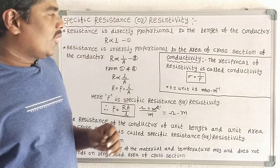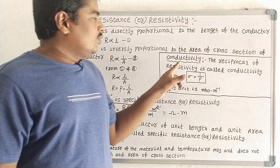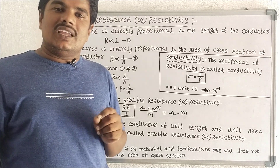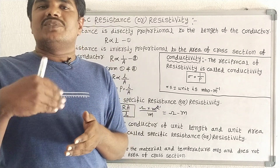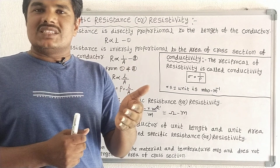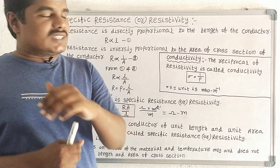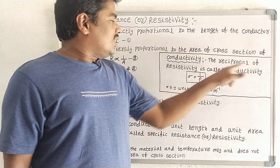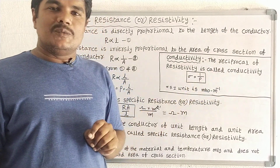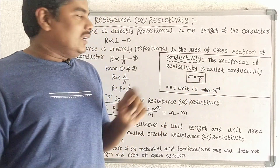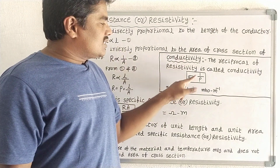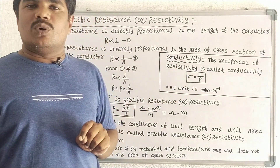We have to note that point. Now we go to conductivity. Conductivity is the reciprocal of resistivity. The reciprocal of resistivity is called conductivity. Conductivity is denoted by sigma. The formula is sigma is equal to 1 by rho.